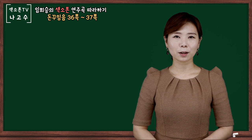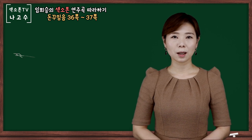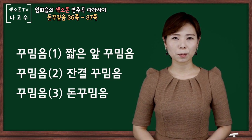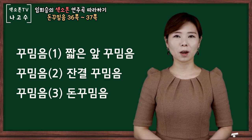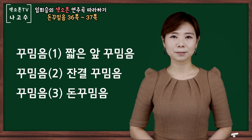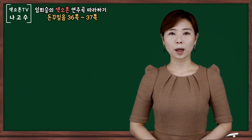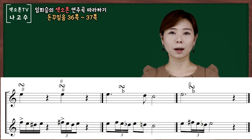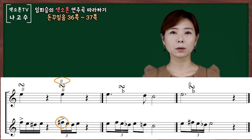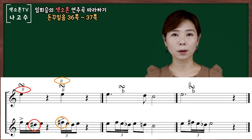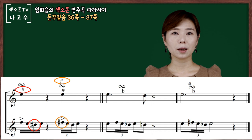돈 꾸밈음을 연습하기 전에 짧은 앞 꾸밈음 그리고 잔결 꾸밈음을 충분히 연습하신다면 이번 강의는 쉽게 연습하실 수 있겠습니다. 또 S자의 모양에 임시표가 있는 경우가 있습니다. 위에 임시표가 있다면 위에 올라가는 음의 임시표를 사용하고 아래의 임시표가 있다면 아래 내려가는 음의 임시표를 사용하여 연주하면 되겠습니다.